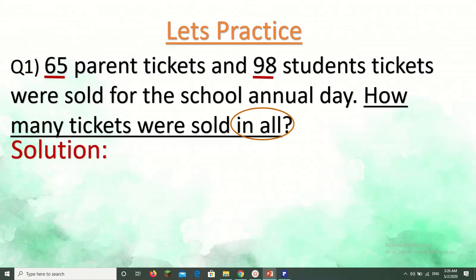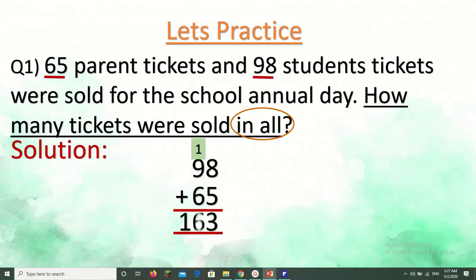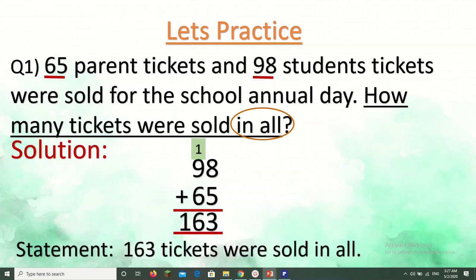Now let's solve. Put the bigger number on top and the smaller number at the bottom with the addition symbol. 8 plus 5 is 13, carry 1. 9 plus 6 plus 1 is 16. So we get 163. We don't stop here — since this is a word problem, we end with a statement: 163 tickets were sold in all. Let's see some more examples of addition word problems.